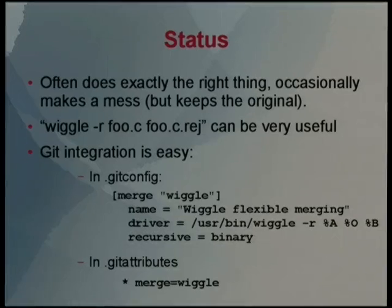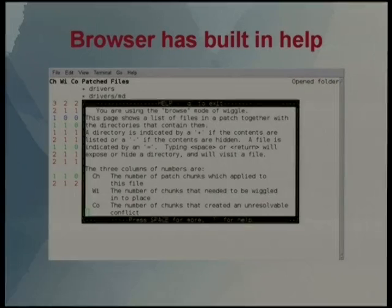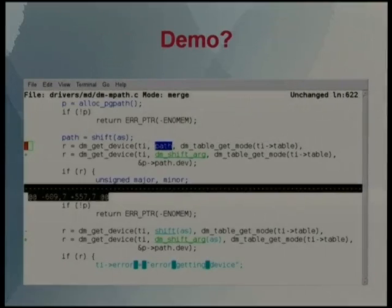So where is Wiggle now? It often works, but occasionally makes a bit of a mess. I have a script: wiggle -r foo.c foo.c.rej — it wiggles the reject into the file then throws me into an editor to fix things up. I don't think Wiggle's Git merge resolution is as good as I'd like it to be, but Git is configurable, so you can tell Git to use Wiggle to merge things. You can also give it a patch and browse a patch — it shows you all the files with colour-coded numbers: first is how many patch hunks it found in the file, second is how many it had to wiggle in place, third is how many caused conflicts. Conflicts are in red so you can find and look at them. There's inline help — just type H.